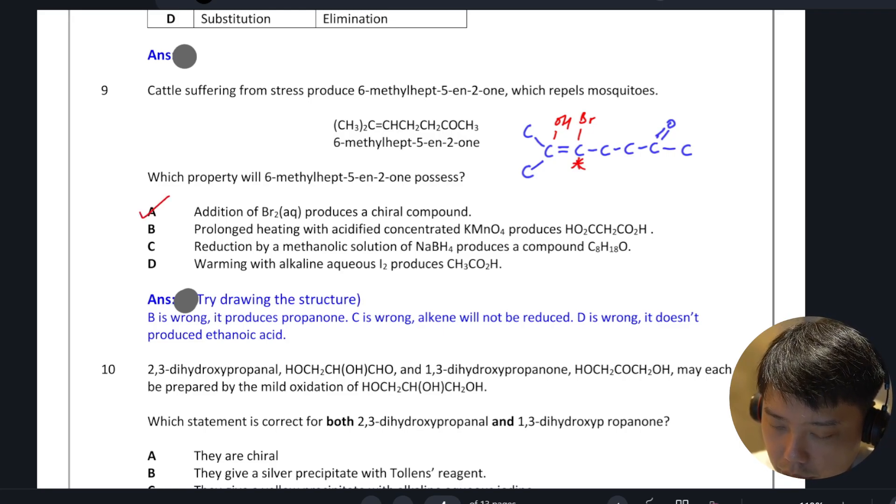Okay, now let's take a look at the other options, shall we? Prolonged heating with acidified KMnO4 gives propanedioic acid. Okay, so if we cleave this, we do not get that. We get actually propanone. Okay, so D is wrong.